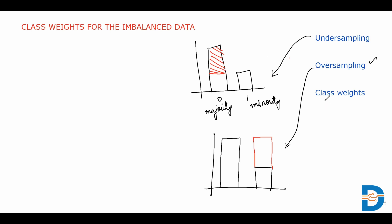We also have another method called class weights, where we assign weights to the classes. We assign a higher weight to the minority class than the majority class. When the model makes any misclassification on the minority class, a higher penalty is given, so the model will try to reduce the error and reduce the number of misclassifications.